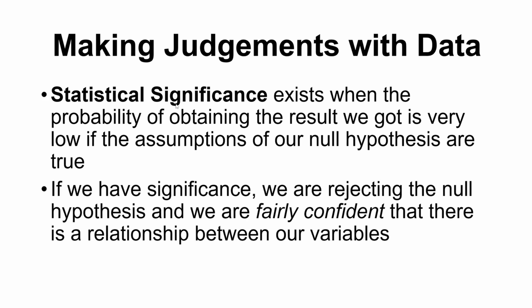If we got this large of a difference between our groups, it is very unlikely to have occurred if there was actually no difference between those groups — no real relationship present. So if we say there is a significant difference, we reject the null hypothesis and say we are fairly confident there is a relationship between our variables. We are going with our alternative hypothesis and saying: yes, there is a relationship here, there is a difference between these two groups.